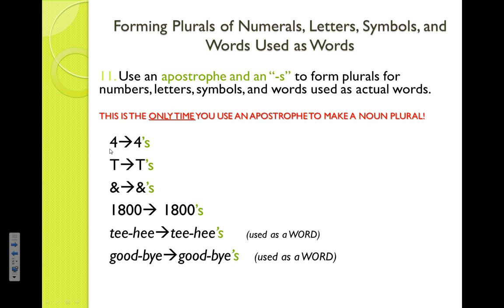You can use apostrophe S for numbers. Let's say I have multiple number stickers and I need two more fours to put on my mailbox — I would say four apostrophe S. Same with letters: if I said you didn't capitalize your T's in this sentence, that's T apostrophe S. A classic example is talking about grades — if we had many A's on this assessment, I'm talking about more than one letter A, so I would put A apostrophe S.